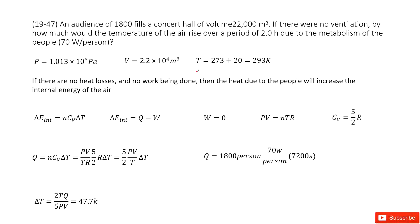Now we consider a concert hall. The volume is given. We can assume the pressure as 1 atm and the temperature as room temperature, 20 degrees Celsius — convert the unit to Kelvin. Inside this concert hall, we have 1,800 people. These people will produce heat that flows into the air. For each person, the power is about 70 watts, and it takes two hours. The question asks how much would the temperature increase in the air.